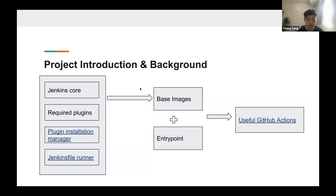Jenkins file runner action for GitHub actions provides a customized containerized environment and useful GitHub actions for users to run the Jenkins pipeline inside the GitHub actions. In more detail, if you're using these actions, any GitHub project which has a Jenkins file can execute its workflow in the GitHub actions runner. It aims at applying Jenkins in the GitHub actions in a function-as-a-service context. This feature is based on the Jenkins file runner, which is a command line tool for the Jenkins pipeline execution engine.